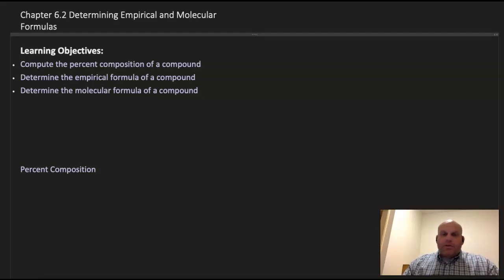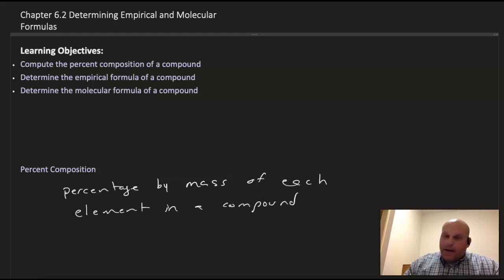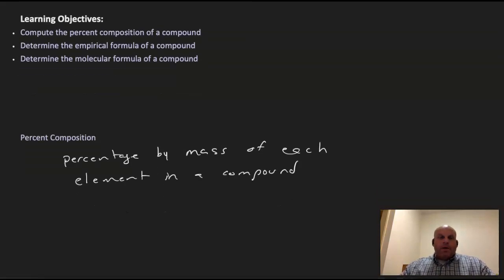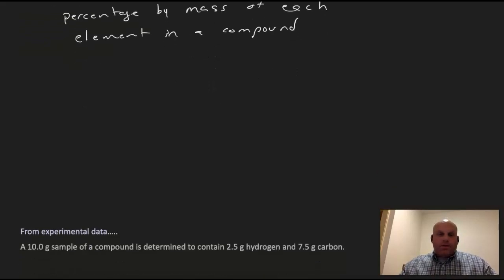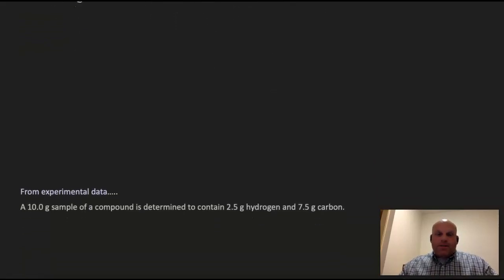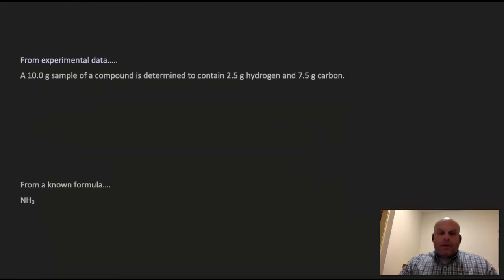Let's start quickly with percentage composition. This is the percentage by mass of each element in a compound. You're going to run into two types of problems here: those problems that are from experimental data, and also problems from a known formula.